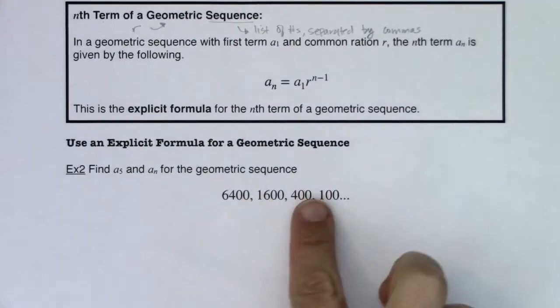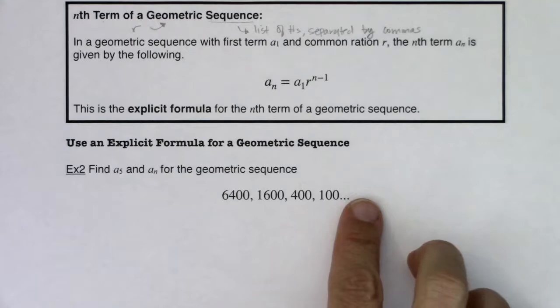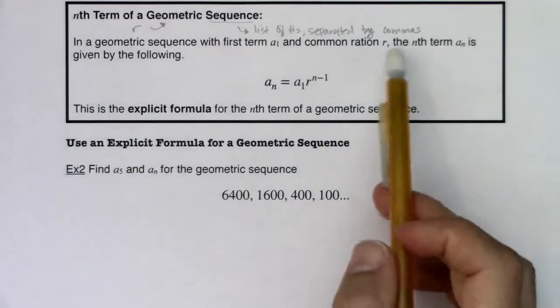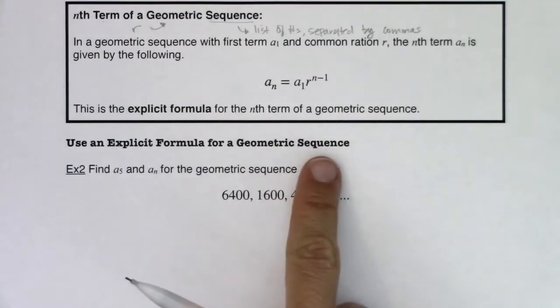You can see it right here. Before we even read the directions, there's a list of numbers separated by commas. And I mention this separated by commas because when we get to the next section, it's going to say the word series.